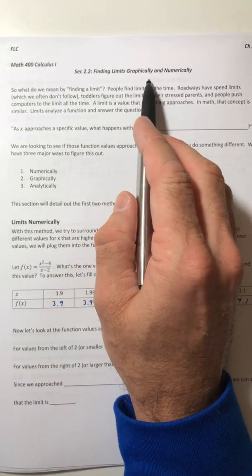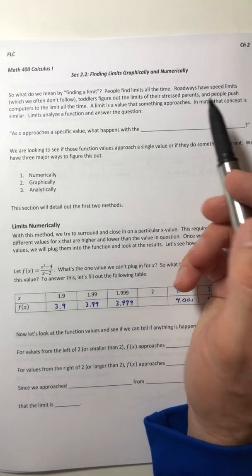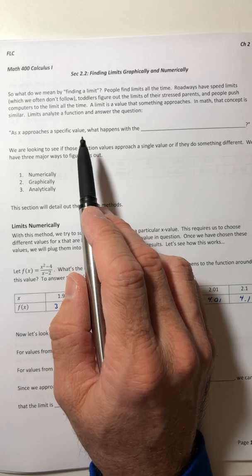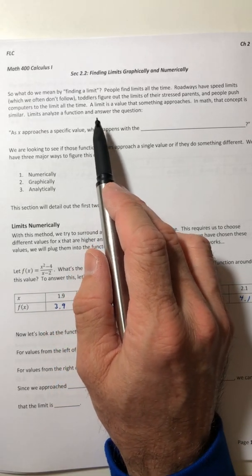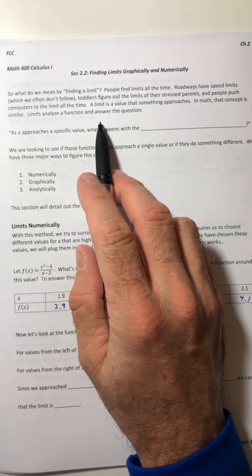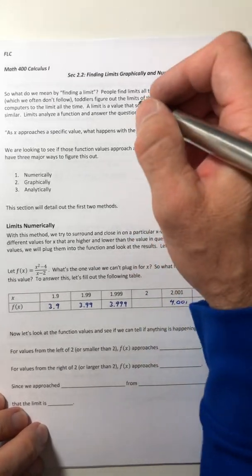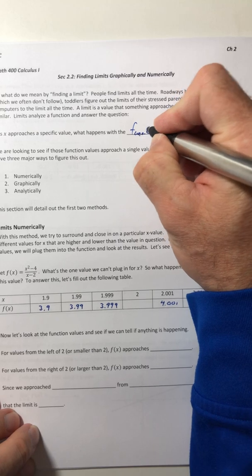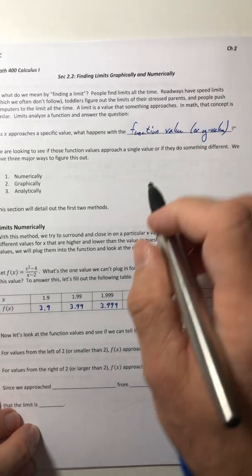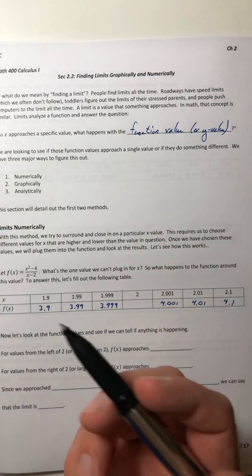We're going to be finding limits graphically and numerically in this section. So what do we mean by finding a limit? Well, people find limits all the time. Roadways have speed limits. Toddlers figure out the limits of their stressed parents, which we're going through right now. I have two. And people push computers to the limit all the time, especially if you're a gamer. So a limit is a value that something approaches. In math, that concept is really, really similar. So limits analyze a function and answer the question: as x approaches a specific value, what happens with the function value or the y value? As x is getting closer and closer to something, what's going on with the function value? Is it also getting closer and closer to something? Or are they approaching two different values? What's happening?